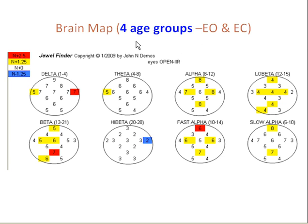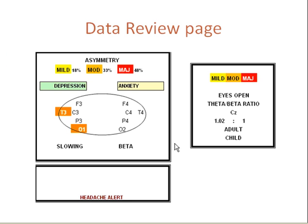DZ cap software arranges the data according to four age groups with eyes open and eyes closed. You can see the areas of the brain that are greater than 2.5 standard deviations — the right temporal lobe, the posterior cingulate gyrus, and the anterior portion of the cingulate gyrus. There is also a data page review which helped us appreciate that with this one client, there was a left hemisphere alpha asymmetry signifying depression or a learning disorder. The theta-to-beta ratio was normal at the vertex or CZ, and there were no headache alerts.